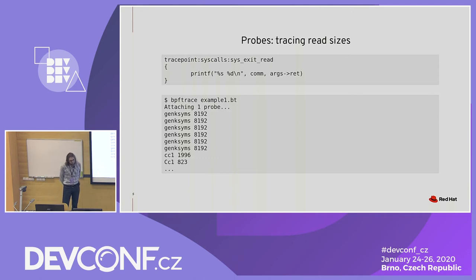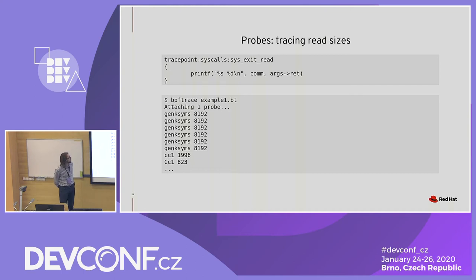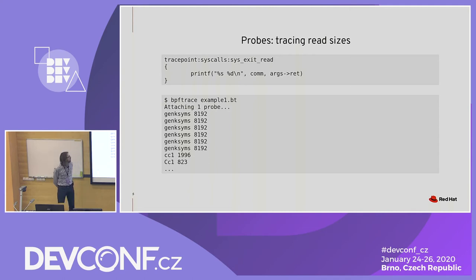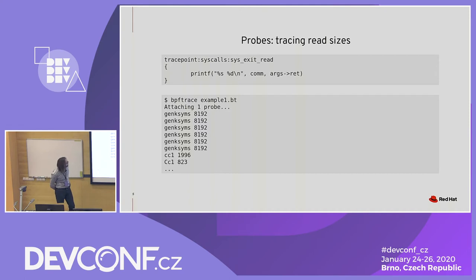That's a pretty simple example. We print two things: first is the command name — comm is a built-in variable in BPF trace that contains the command name. And next, it's the return value of the syscall, which is the size of the read. If you look at the output, you can see we just print something every time we read something. There's a possibility to have a more synthetic output — we're going to see that later.